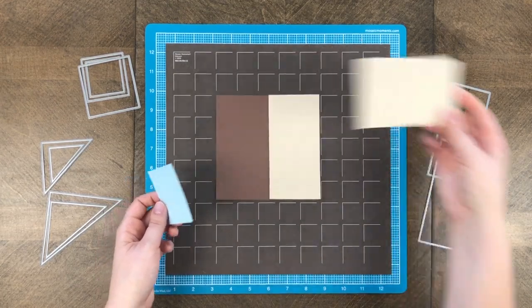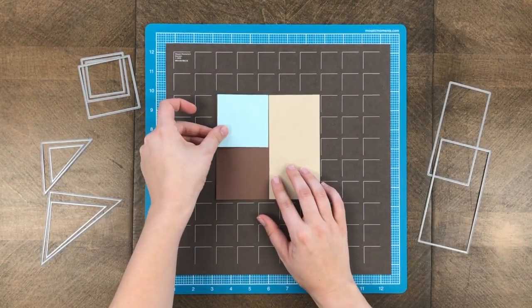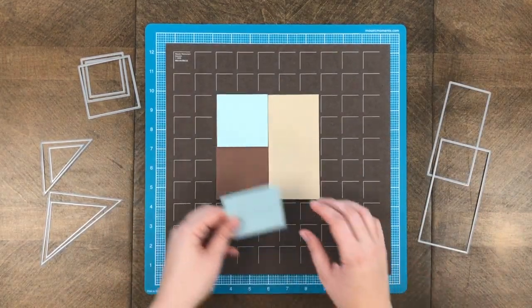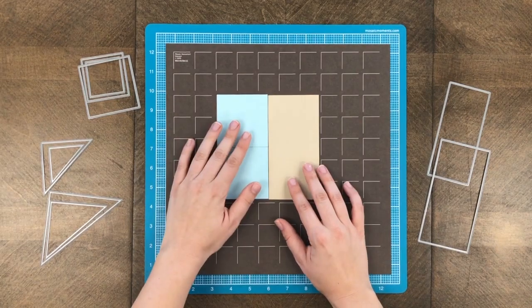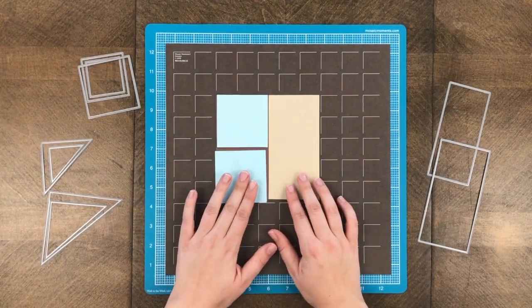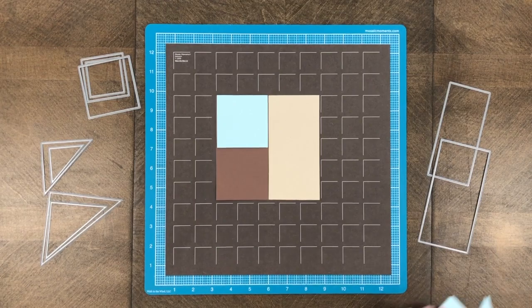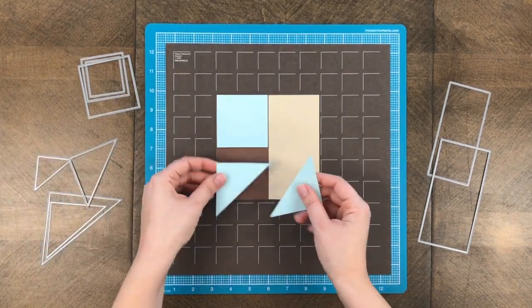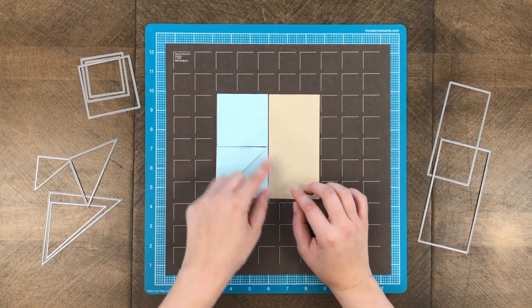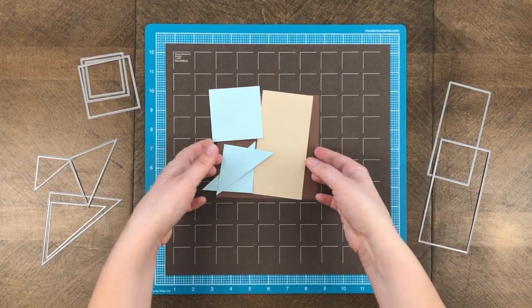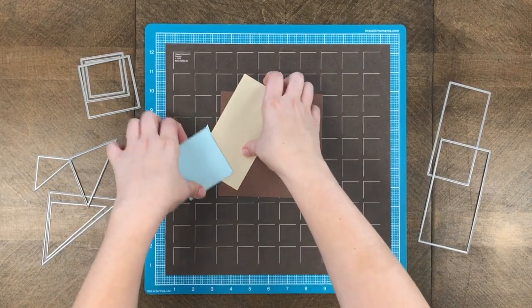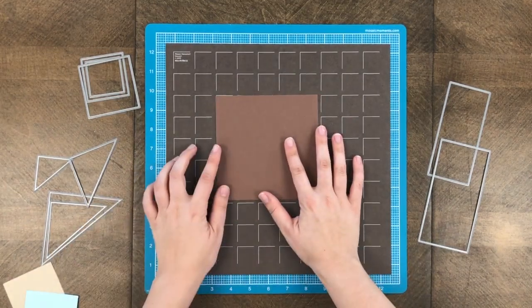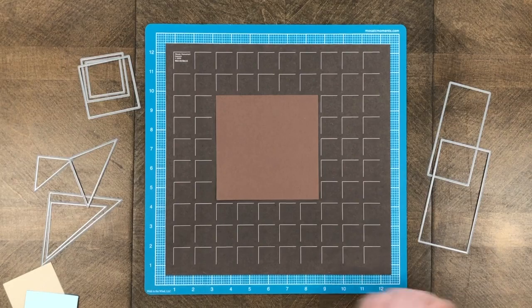You could also fill this space with four squares or even have half of it with a rectangle and then the other half be two squares just like here. And then you have these triangle pieces and so you could have a square and then those two little triangles below it and it'll fill that space. So that's what's fun about this set is you can be really creative and build your square in so many ways.